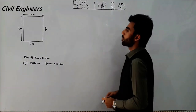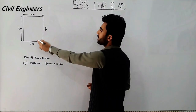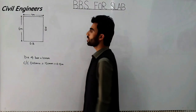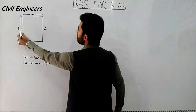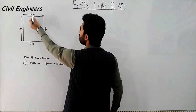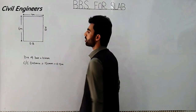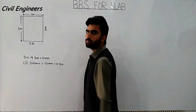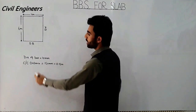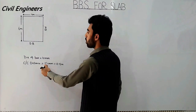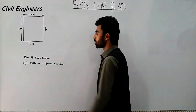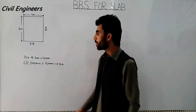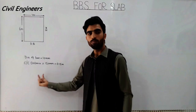This is the given sketch about BBS for the slab. Suppose this is a central room which has a length of 6 meters and a breadth of 4 meters. The diameter of bar being used in this room is 10 millimeters, and the center-to-center distance is 150 millimeters, which becomes 0.15 meters.